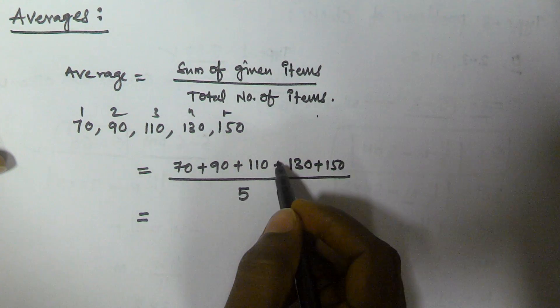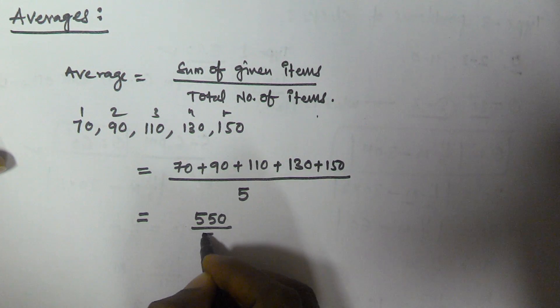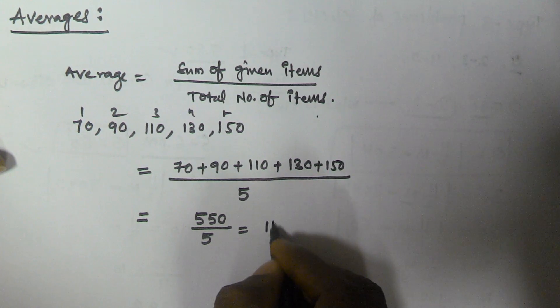When we add all these numbers we get 550. So 550 divided by 5 equals 110.